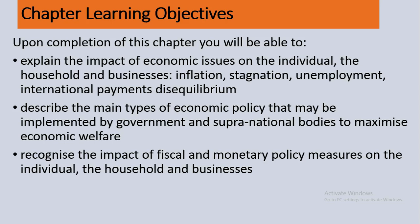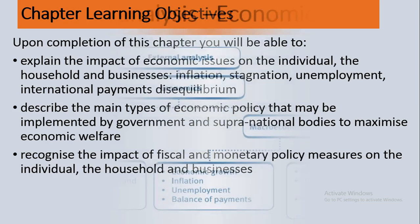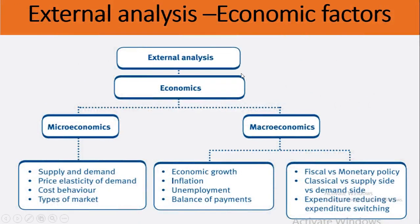So let's begin. What we are going to discuss here is a chart roadmap in external analysis. We have already discussed political - that was the first. The second is economics. We'll discuss microeconomics and macroeconomics. In microeconomics: supply, demand, price elasticity, cost behavior, and market types. In macroeconomics: economic growth, inflation, unemployment, balance of payment, government measures like fiscal and monetary policy, classical versus supply-side economics, demand-side economics, and expenditure reducing versus expenditure switching strategies.